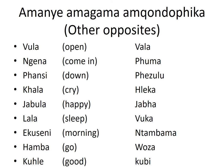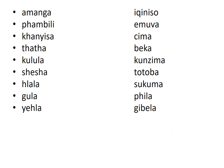Let us continue reading these Zulu word pairs: tshabhula / tshapa; lala / vuka; ekuseni / ntambama; hamba / woza; kuhle / kubi; amanga (lie) / iqiniso (truth); pambili (forward) / emuva (back).